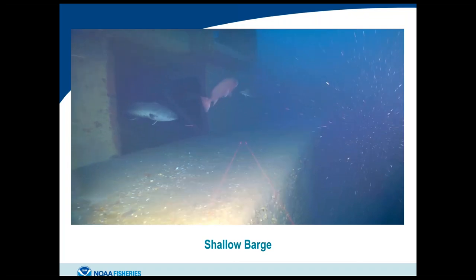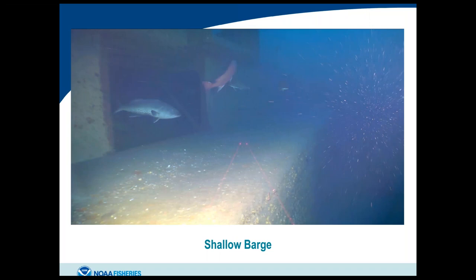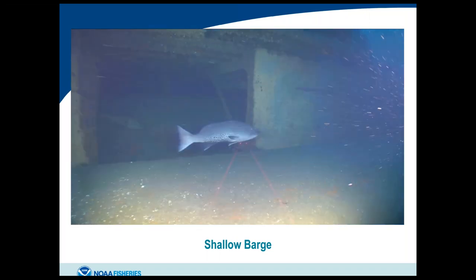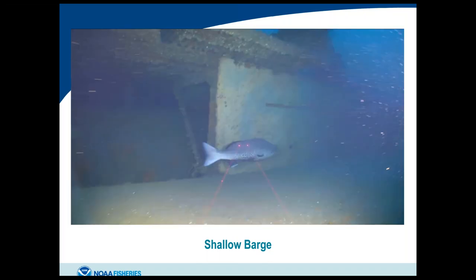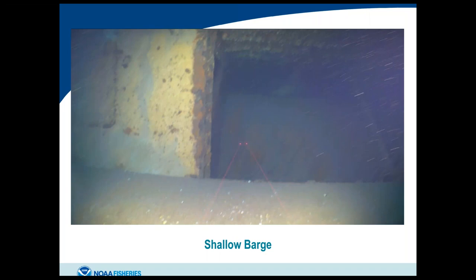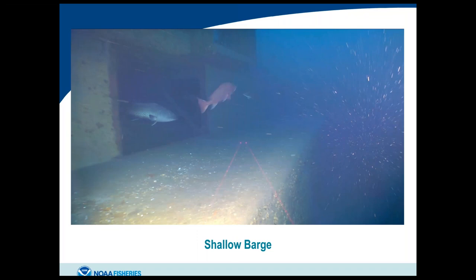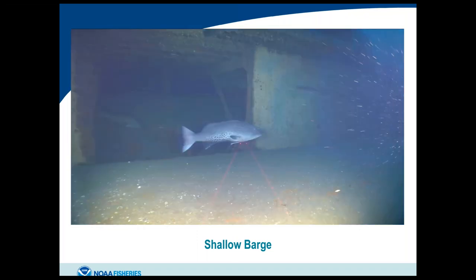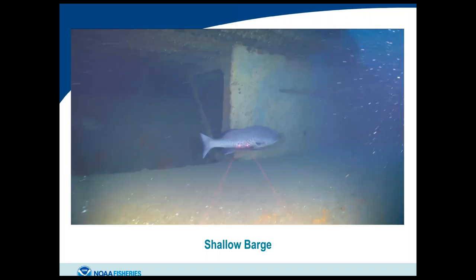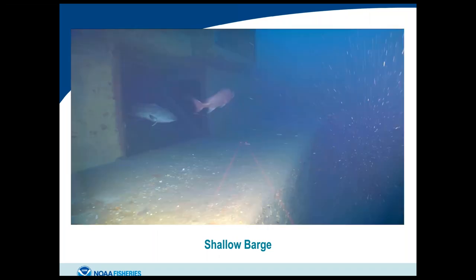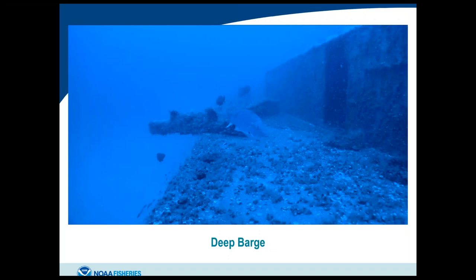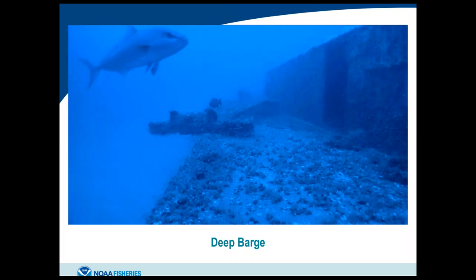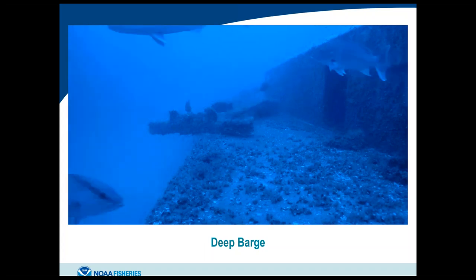The deep barge in 100 meters of water shows depth-influenced fish composition: while scamp and red snapper appear like the shallow barge, we also see more snowy grouper, yellow-edged grouper, and warsaw, and even a juvenile misty grouper in the past. The 'new barge' — about 100 meters deep, the newest material sunk by South Carolina DNR, referred to as the swing bridge — has hosted snowy grouper, amberjack, and a juvenile misty grouper. Notably, the only place we've ever observed misty grouper in 17 years of survey has been on these artificial structures.